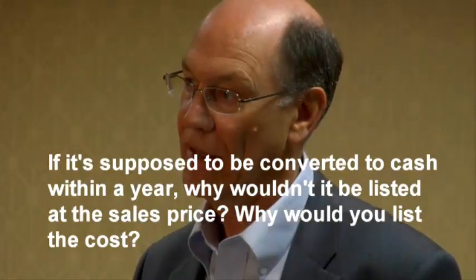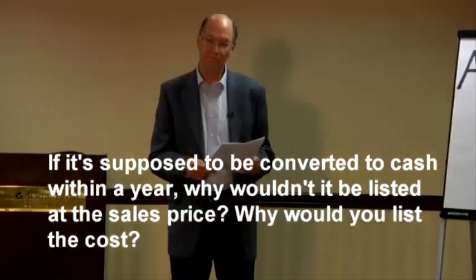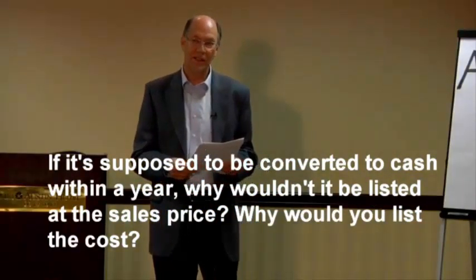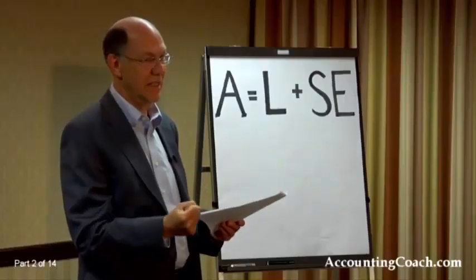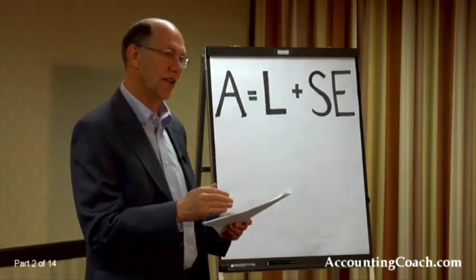A student asks: if inventory is supposed to be converted to cash within a year, why list it at cost rather than at the selling price? Great question — if current assets are expected to turn to cash within one year, why not put down the selling price, since that's what we'll actually collect?